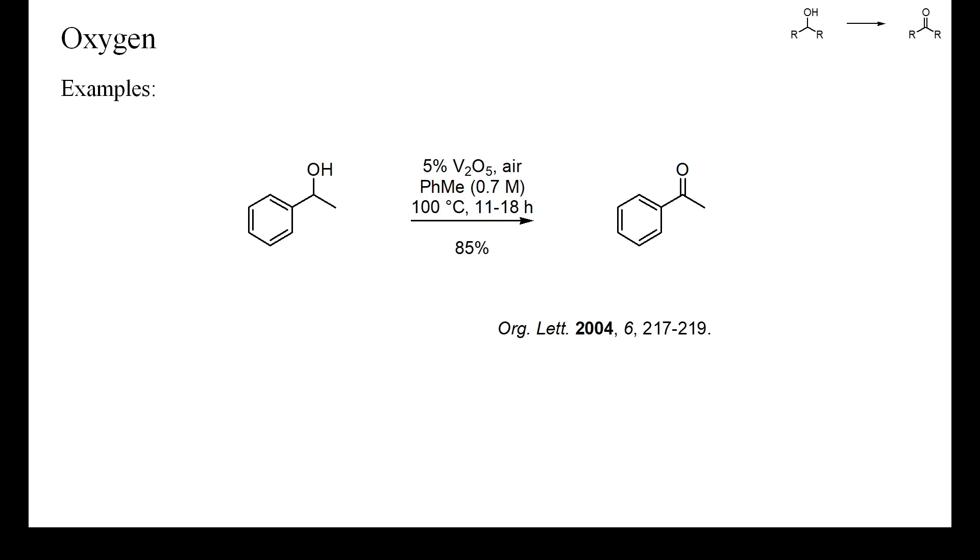In this example, the oxidation was done in toluene in the presence of vanadium pentoxide as catalyst. Vanadium pentoxide is used for various industrial oxidations and amoxidations and should be easy to recover due to its low solubility in toluene.